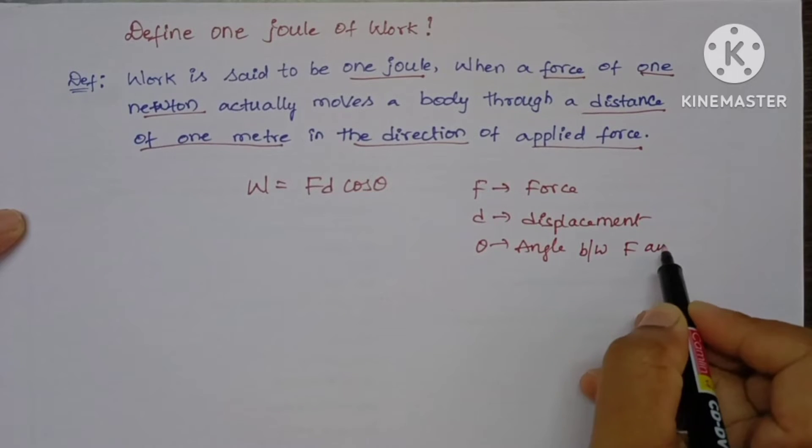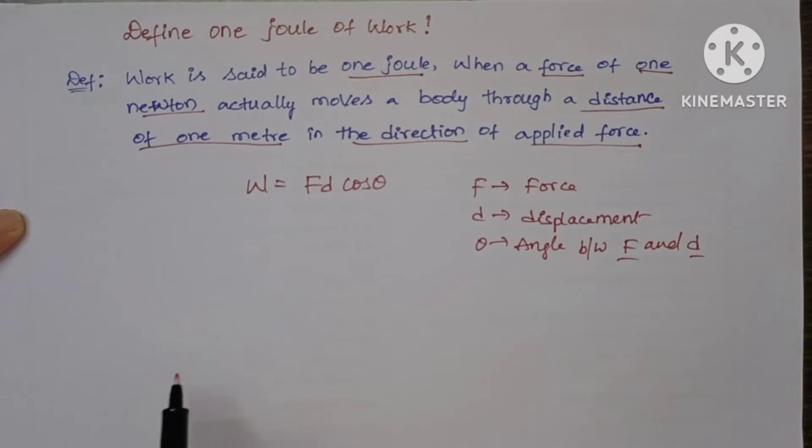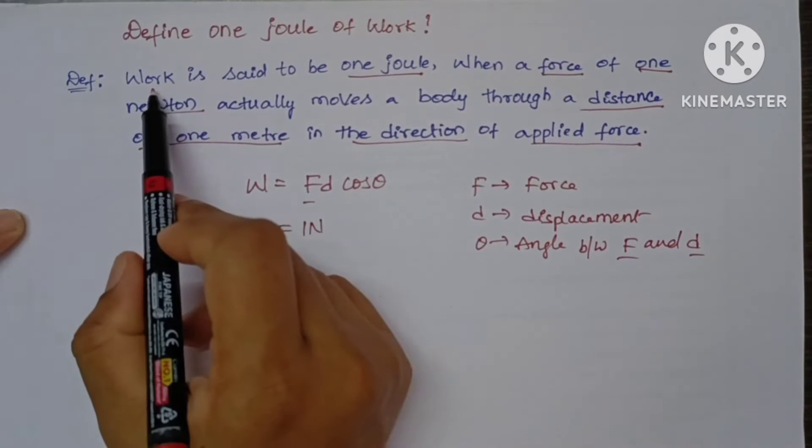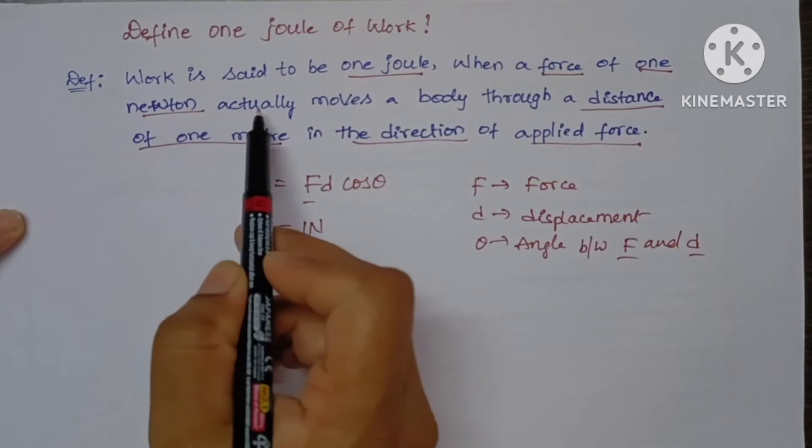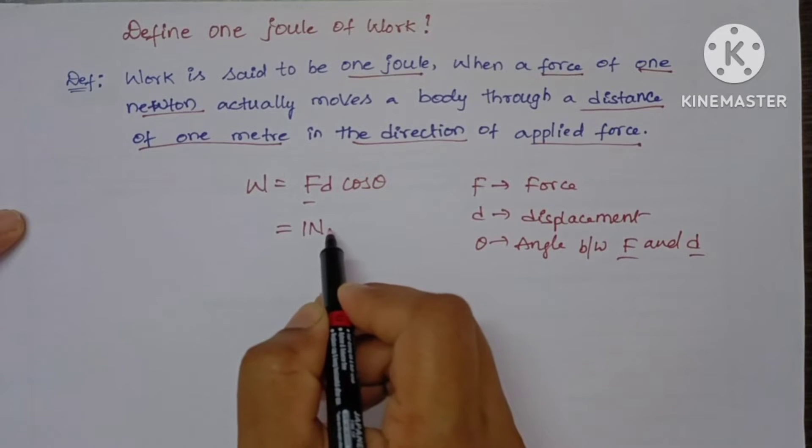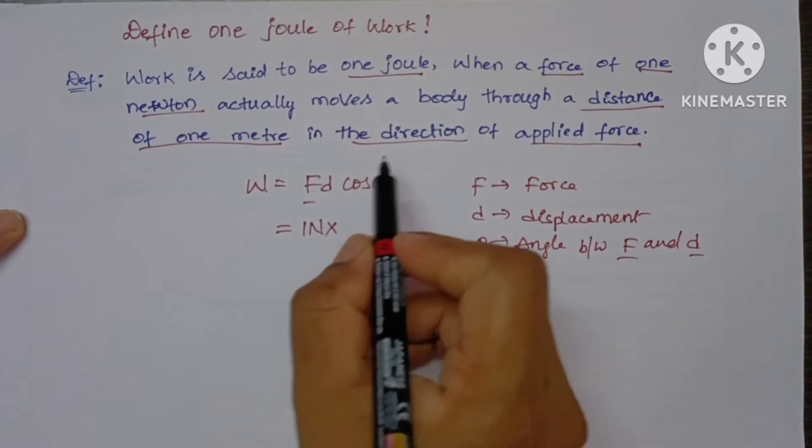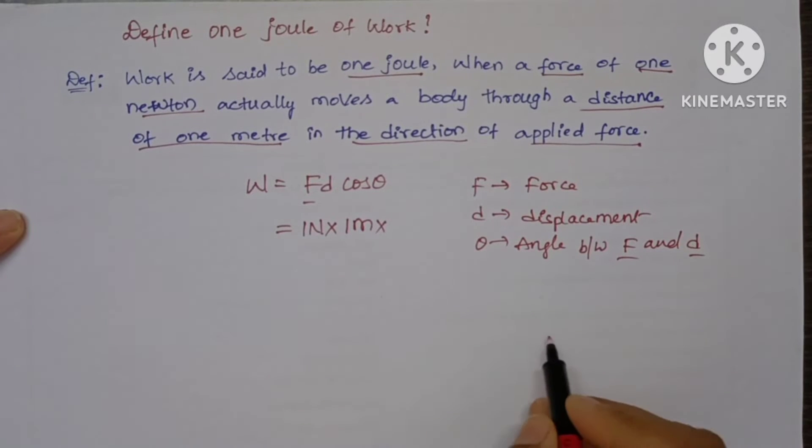Okay, let us see here. Work is said to be 1 joule when a force of 1 newton actually moves a body, so 1 newton of force moves a body through 1 meter.